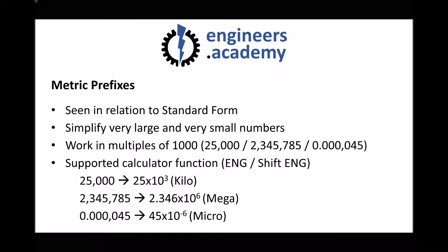Let's look briefly at metric prefixes, which we've already seen when we looked at standard form. The advantage of using metric prefixes is it makes it a lot easier to handle very large and very small numbers. We can work in multiples of a thousand, so numbers like 25,000 or 2,345,785 can be represented using a metric prefix, as can a small number like 0.000045. There are also calculator functions to support these — look for the ENG button on your calculator, and you can move in factors of a thousand in the opposite direction using Shift ENG.